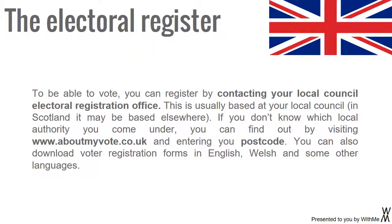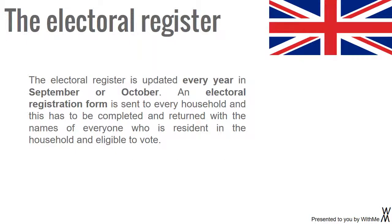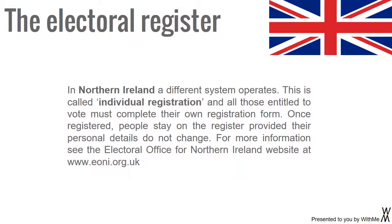You can also download voter registration forms in English, Welsh and some other languages. The Electoral Register is updated every year in September or October. An electoral registration form is sent to every household, and this has to be completed and returned with the names of everyone who is resident in the household and eligible to vote. In Northern Ireland a different system operates, called individual registration, and all those entitled to vote must complete their own registration form.